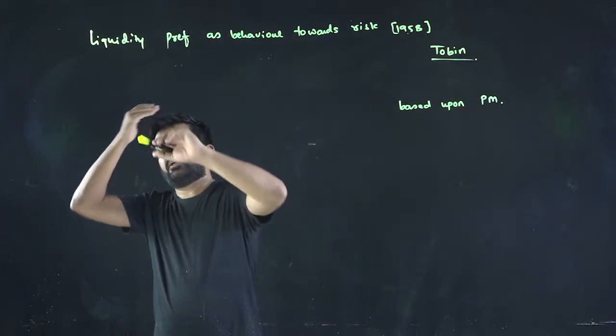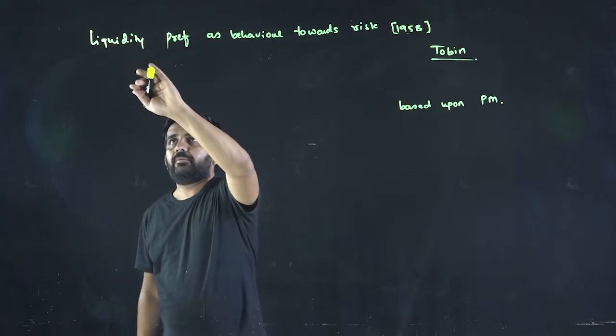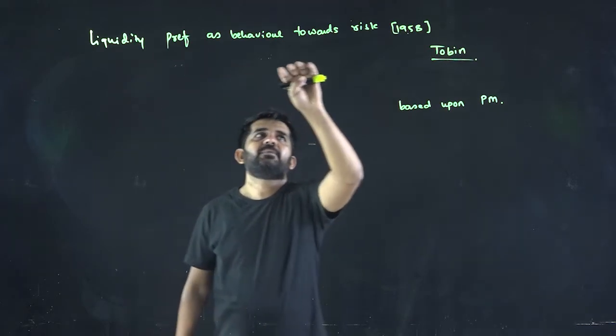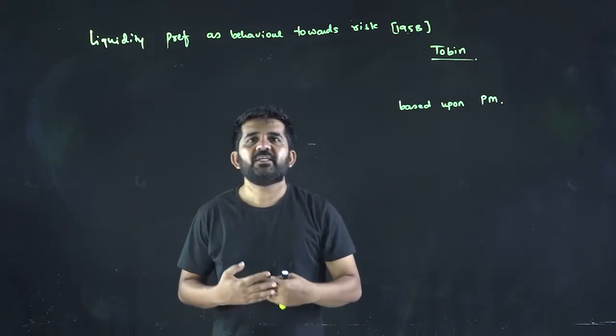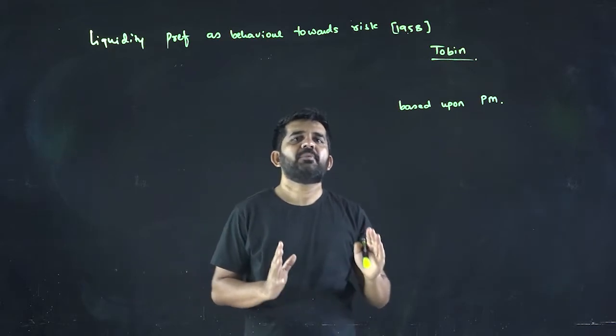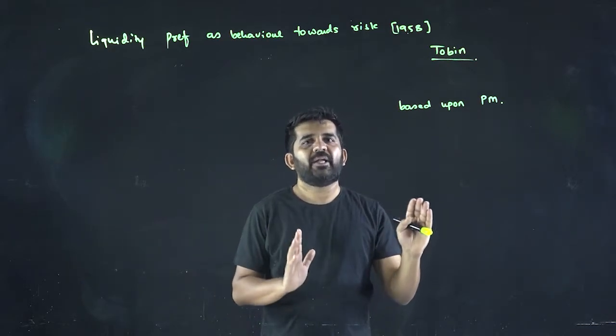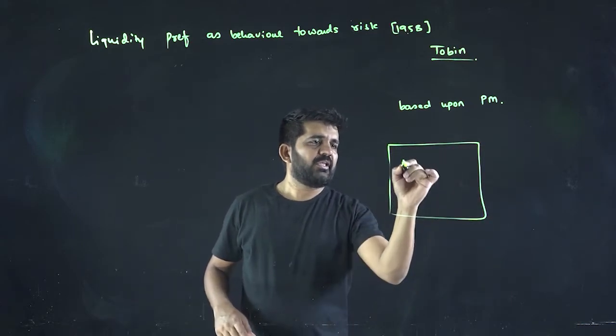Hello friends, this was an article published by Mr. Tobin named 'Liquidity Preference as a Behavior Towards Risk' for demand of money. What he elaborated in his article is the theory of money should be based upon as if you are managing a portfolio. So if you are managing a portfolio, there will be A, B, C securities, but there will also be cash balance.